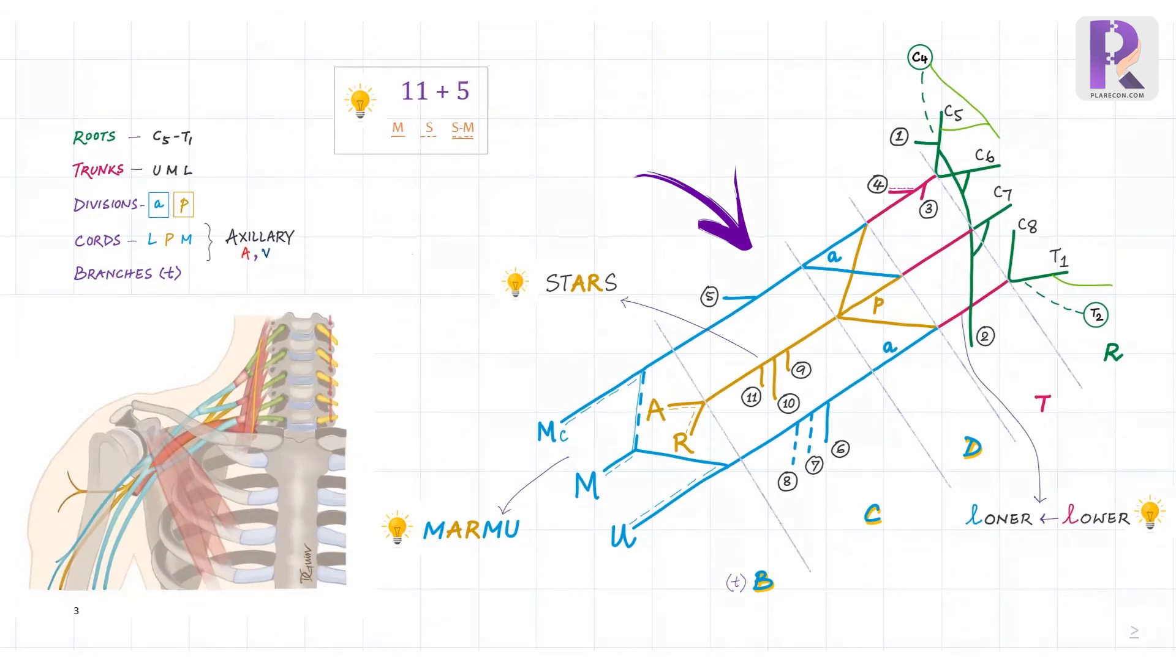Moving on to further details of each of the five parts of the brachial plexus and their side branches. On the right, we can see the color-coded version of the same line diagram and on the left, a representative brachial plexus illustration. Starting off with the roots of the brachial plexus, which lie in the interscalene triangle. They are formed by the ventral rami of C5, C6, C7, C8, and T1 spinal nerves.